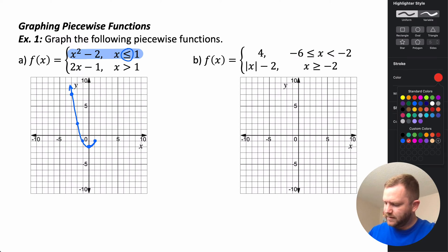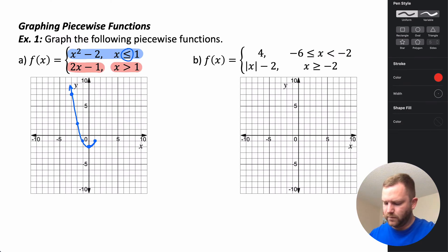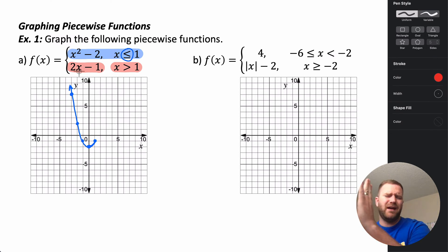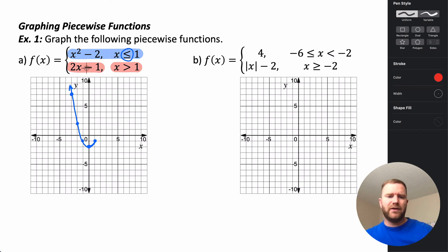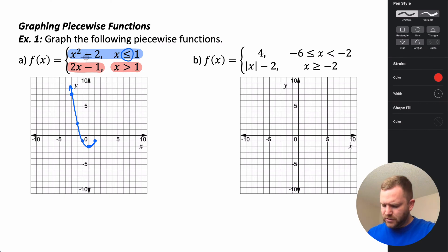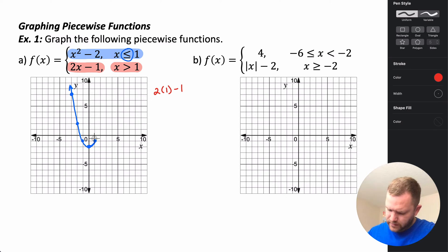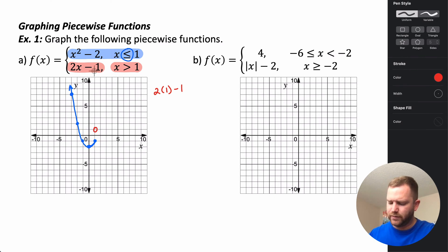The next portion is the linear equation 2x minus 1 for x values greater than 1. When x equals 1, the graph doesn't actually exist there, so we put an open circle at the point (1, 1) — since 2(1) − 1 = 1. Then we draw the rest of the line using slope: up 2 right 1, continuing that pattern to get the line.